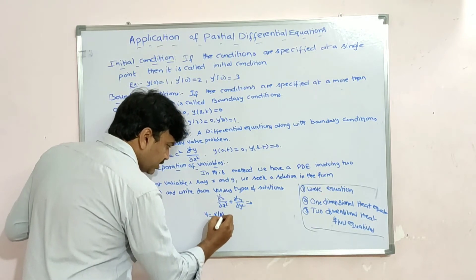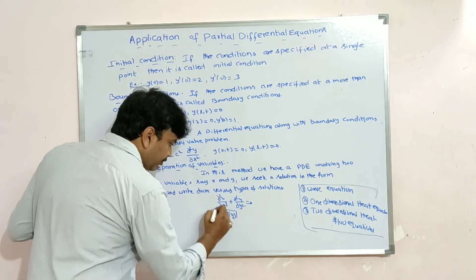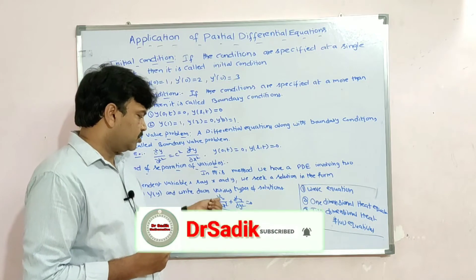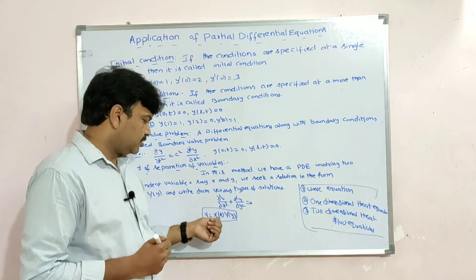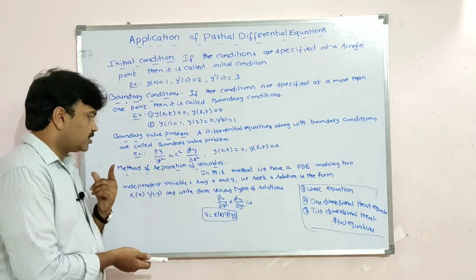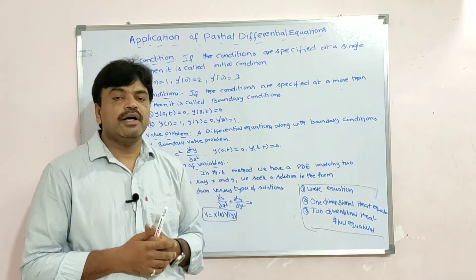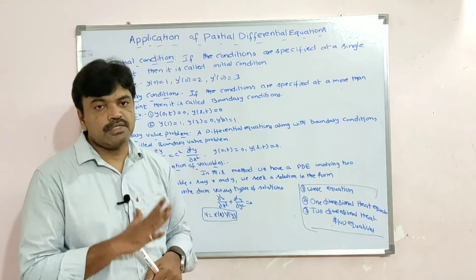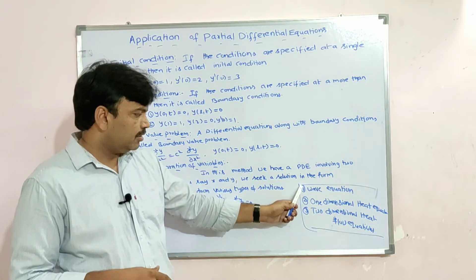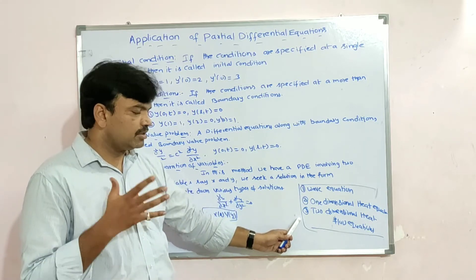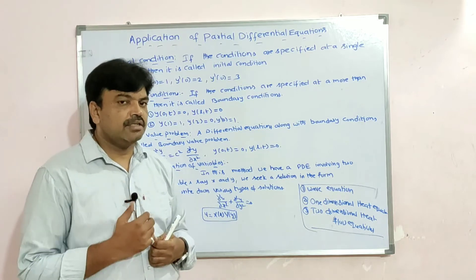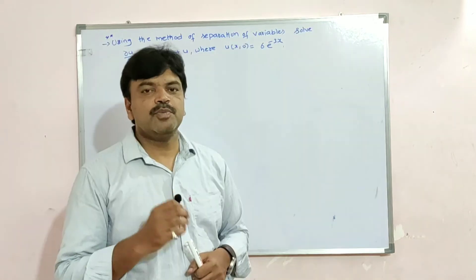The dependent variable u can be written as u = X(x)·Y(y). Substituting into the equation gives X''(x)·Y + X·Y''(y) = 0. You then separate the variables — that's why it's called separation of variables — and simply integrate to get the required solution. We will use this method for the wave equation, one-dimensional heat equation, and two-dimensional heat flow equations.